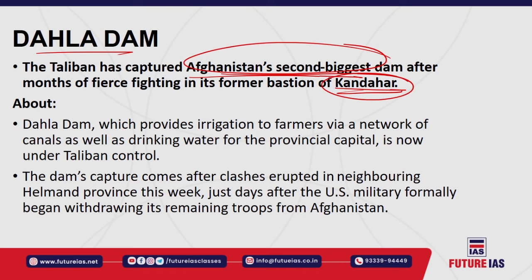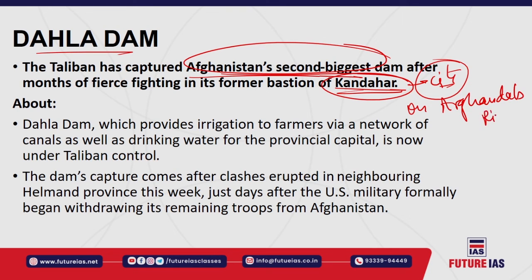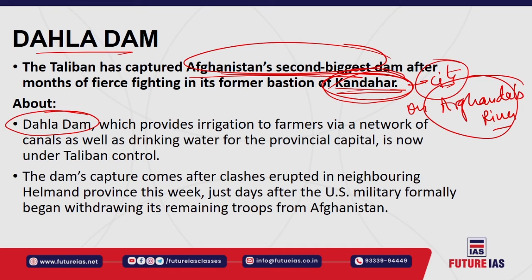Taliban captured Afghanistan's second biggest dam, the Dahla Dam, located in Kandahar. This dam was very important for southern Afghanistan as it provides irrigation water to farmers through a network of canals and also provides potable drinking water to the province. This is a huge loss for the government of Afghanistan, as Taliban control of the dam will retard the flow of water for irrigation and drinking purposes.